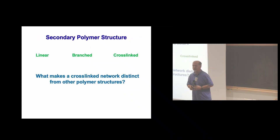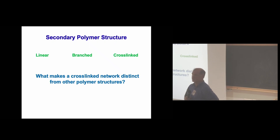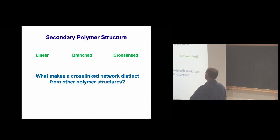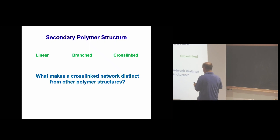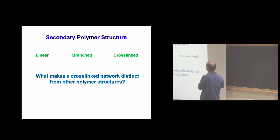Secondary polymer structure: starting from linear materials — Chris Matuszewski and others will do a great job talking about that, including controlled polymerizations and living polymerizations. Then you move on to branched structures, high-density polyethylene to low-density polyethylene, and ultimately to these crosslinked materials.